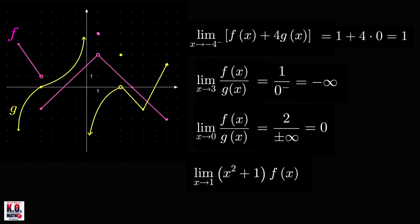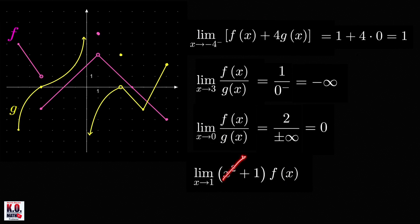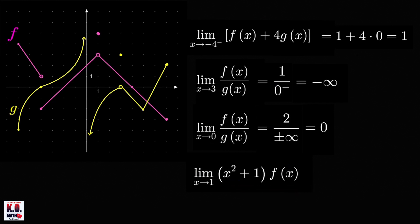Now let's find the limit of this product as x approaches 1. We know that as x approaches 1, x squared will approach 1 squared, which is 1, plus 1, so this will approach 2. Now for our function f, as x approaches 1 from both sides, the points on the graph of f are approaching a unique point, so we have a two-sided limit. The y coordinate of that point is equal to 3. Therefore, the limit of this product is equal to (1 squared plus 1) times 3, which is equal to 6.